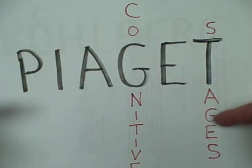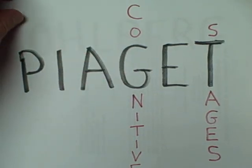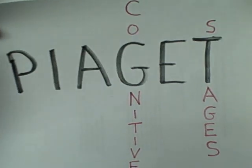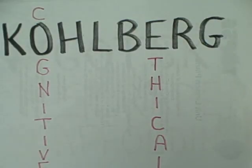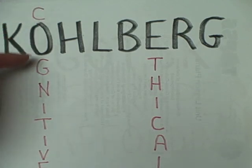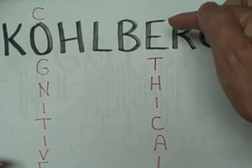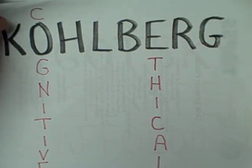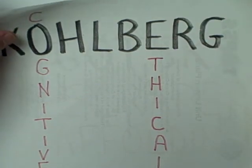Then we come to Piaget, who gives us cognitive stages of development. Piaget influenced Kohlberg, who gives us cognitive stages of ethical reasoning.